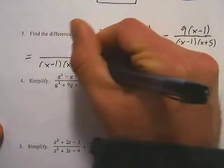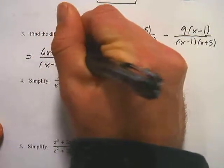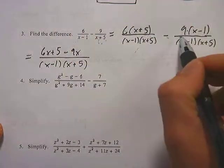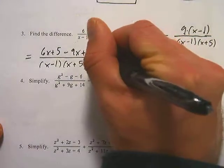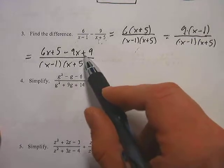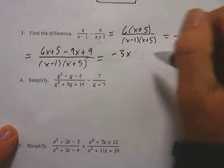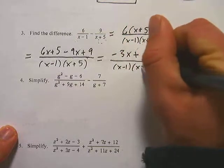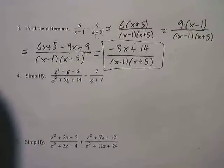Now I'll put these on the same fraction since they have a common denominator, and distribute the 6 and the 9. That gives me 6 times x plus 5, minus 9 times x and 9 times negative 1. Since this is a negative and that's a negative, this becomes a positive 9 — you have to distribute that negative to both the x and the negative 1. So it's negative 9x plus 9. Combining like terms gives negative 3x plus 14 over x minus 1 times x plus 5, which is the final answer.